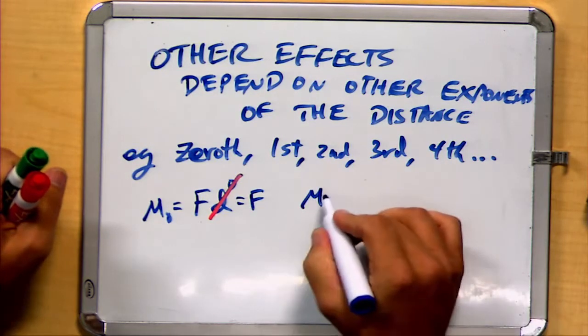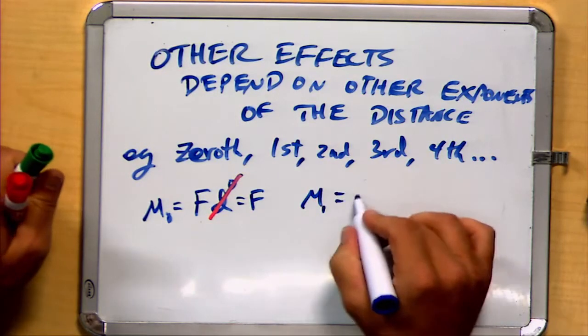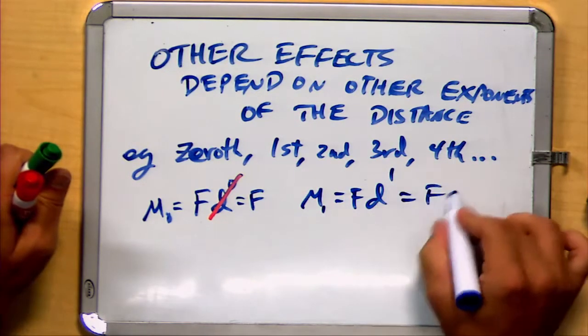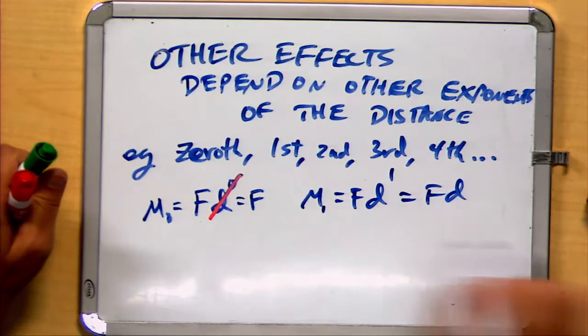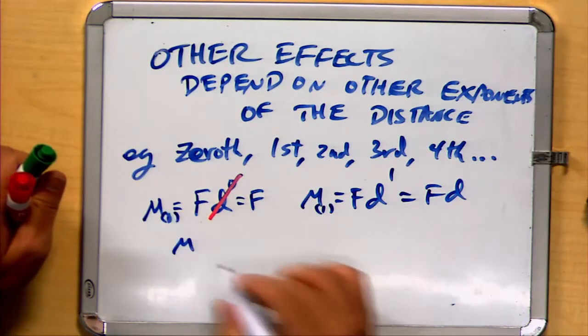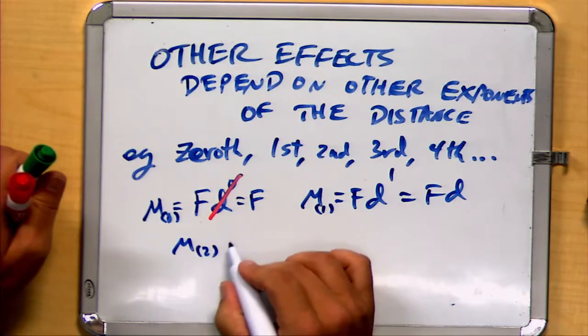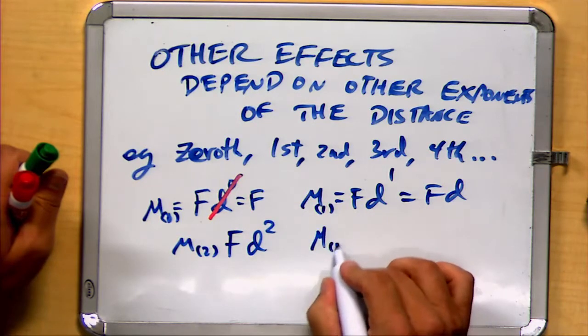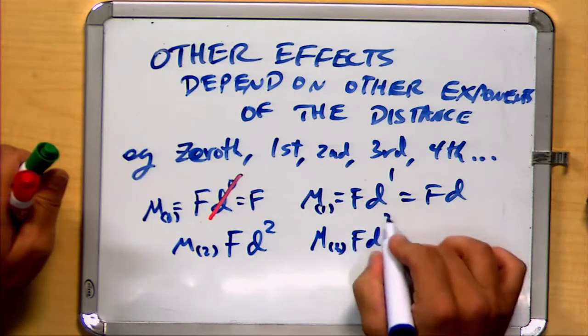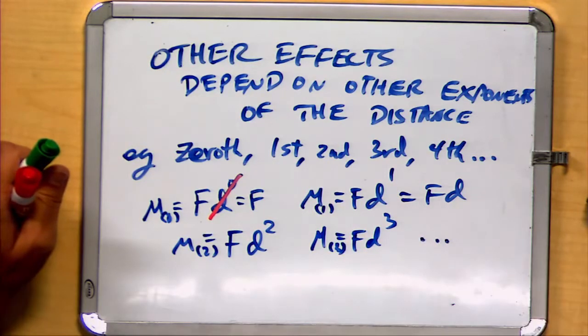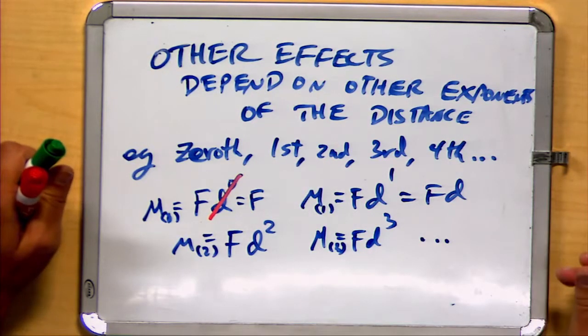However, the first moment is the one we just discussed, the force times the distance to the first power, or simply the force times the distance. And then there are other moments. The second moment might be considered the force times the distance squared, or the third moment is the force times the distance cubed, or the fourth moment is the force times the distance times whatever exponent we choose to use.